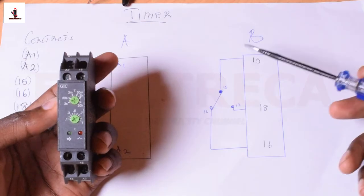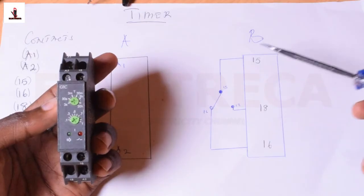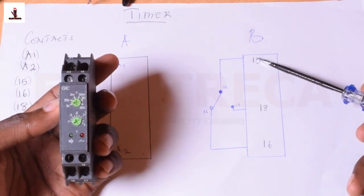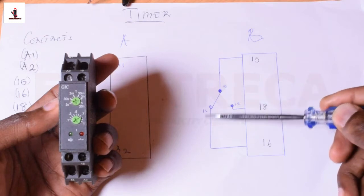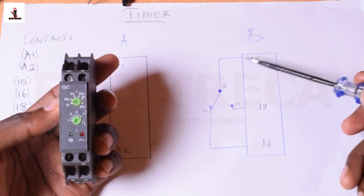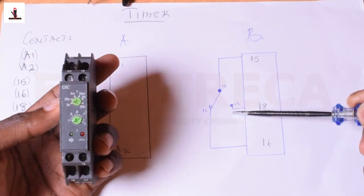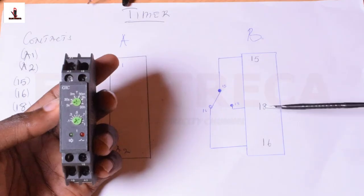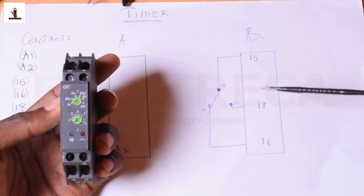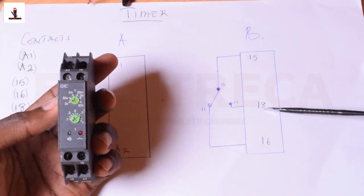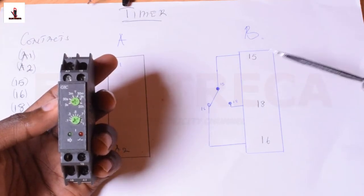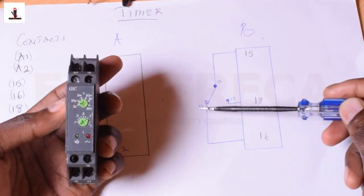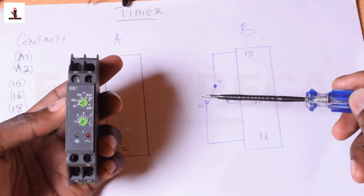This is an on-delay timer. Here, in this circuit, when you feed the supply in through number 18... number 18 is open, so if you're going to use it in on-delay, whatever you want to use it for, you'll have to connect your supply to number 18, such that the moment this timer is energized, number 18 gets supply and then number 16 supply is cut off.